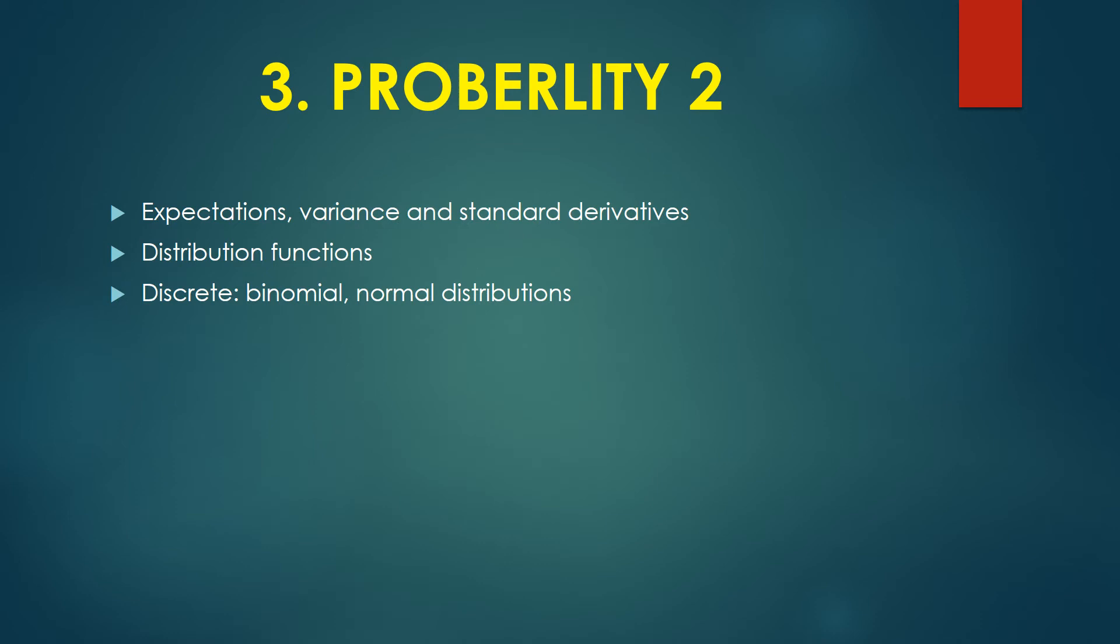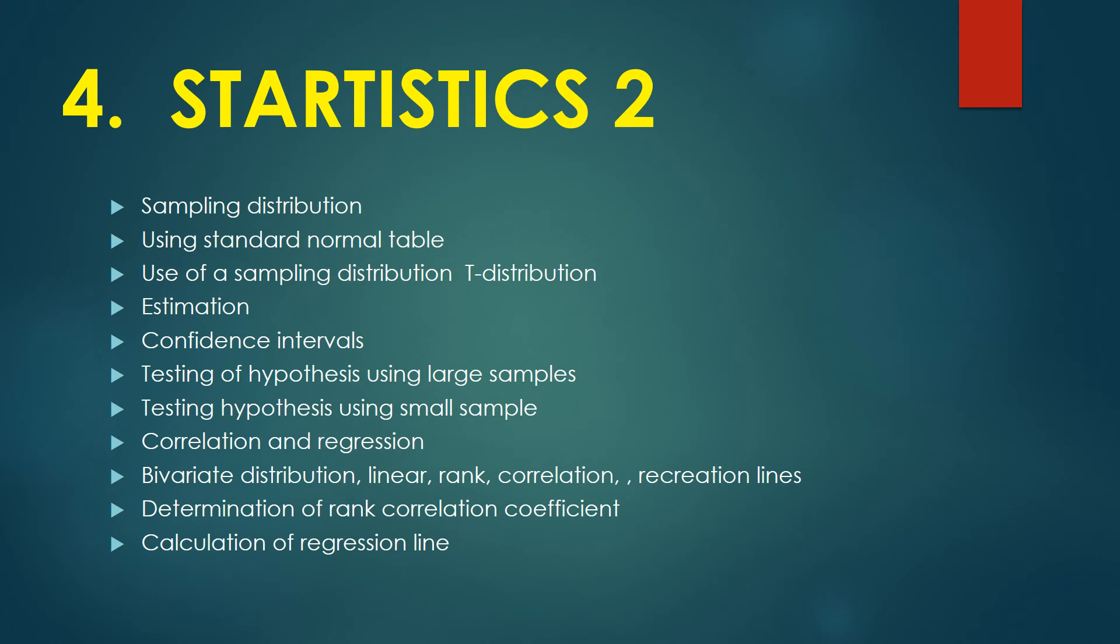Number four we have Statistics 2 and that will have sampling distribution, using standard normal table, use of sampling distribution t-distribution, estimation, confidence intervals, testing of hypotheses using large samples, testing hypotheses using small samples, correlation and regression.